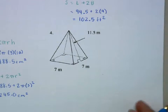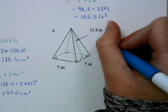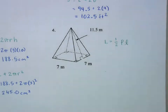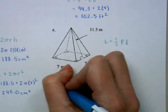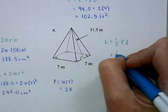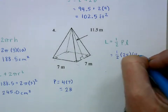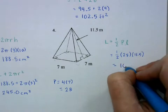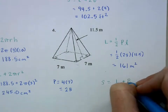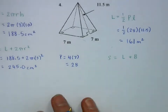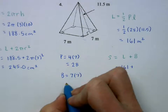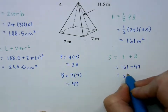Next we have a pyramid. The lateral area of a pyramid — the triangle faces — is one half PL, where L is the slant height and P is the perimeter of the base. The base has 4 sides of length 7, so the perimeter is 28. So this is one half times 28 times 11.5, which is 161 meters squared. The surface area is the lateral area plus the base — the square on the bottom — so 161 plus 7 times 7, which is 49, giving us 210 meters squared.